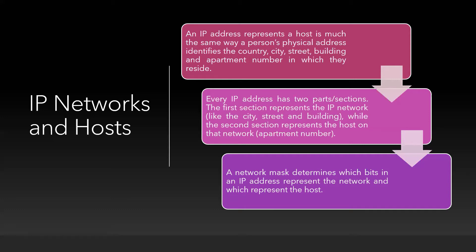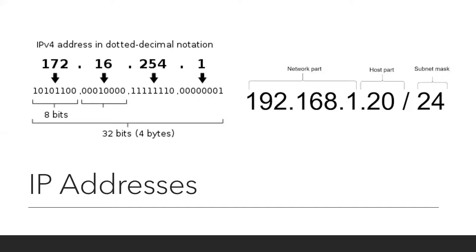An IP address represents a host in much the same way as a person's physical address represents their country, street, building, and apartment number. Every IP address has two sections: the first represents the IP network — equivalent to a person's city, street, and building — while the second represents the host on that network, like the person's apartment number. A network mask determines which bits represent the network and which represent the host. The entire IPv4 address is 32 bits or 4 bytes, divided into four octets.